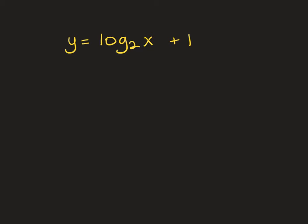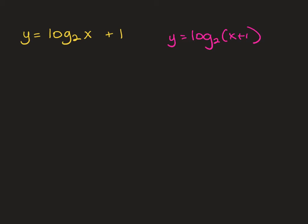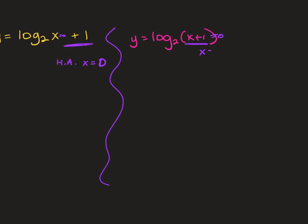Let's try the log base 2 examples. For y equals log base 2 of x plus 1: the plus 1 is outside the parentheses, so it shifts the graph up. It doesn't change the vertical asymptote — the vertical asymptote comes from what's attached to the log inside the parentheses. If there's nothing in parentheses, the vertical asymptote is at x equals 0.